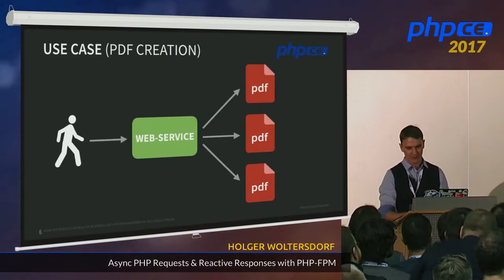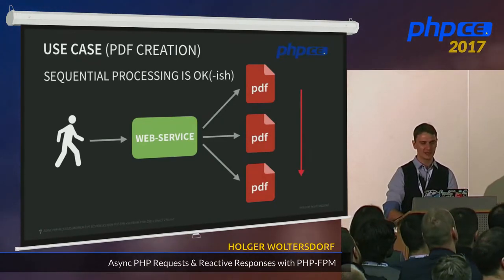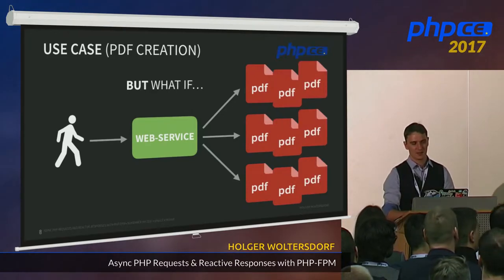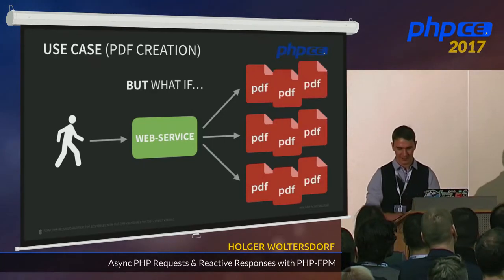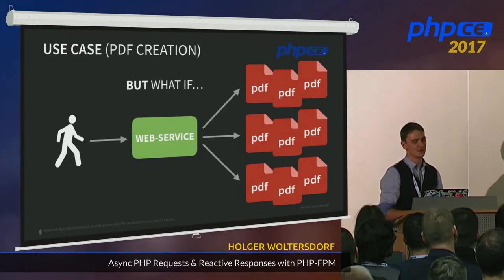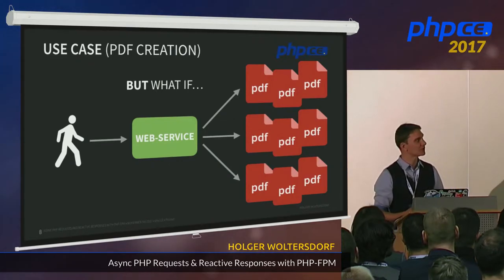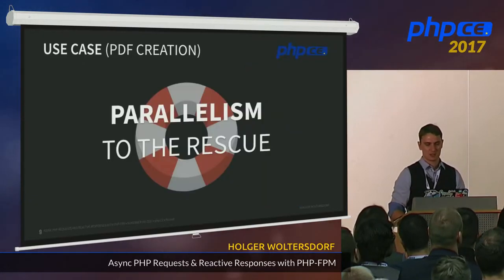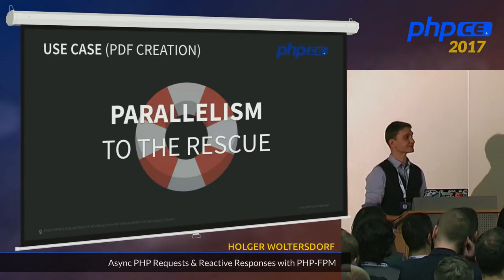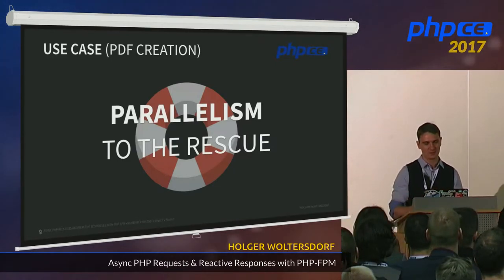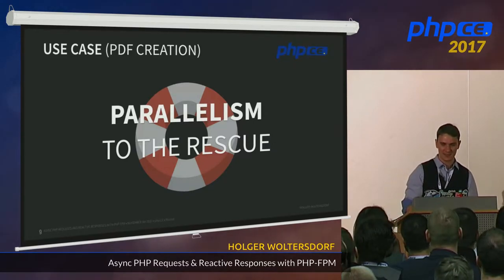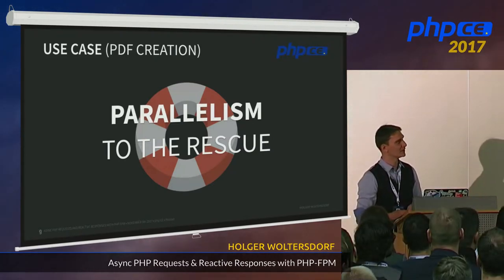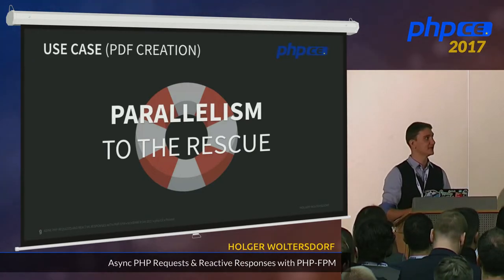When you have only three PDFs, it's quite okay to do sequential processing of those PDFs. But what if you have to create a lot more? Sequential processing wouldn't work because it would take too long. That's why parallelism to the rescue — you want to parallelize, say, seven processes to create the PDFs.